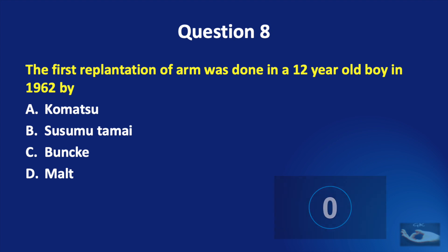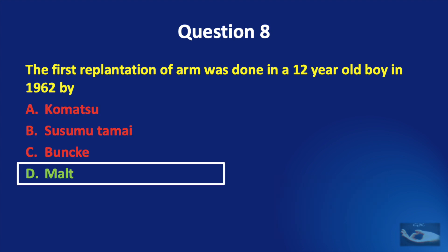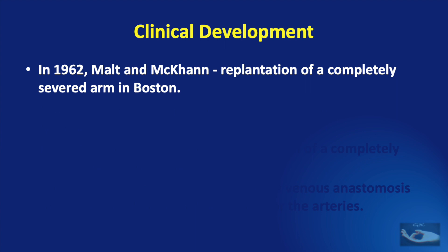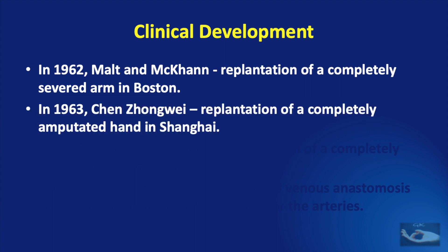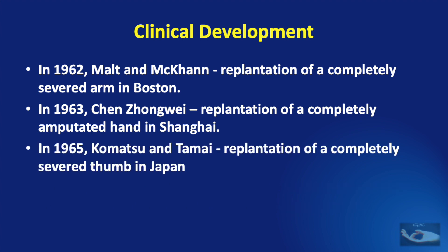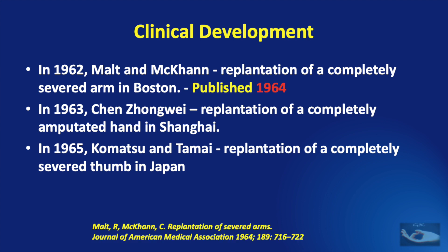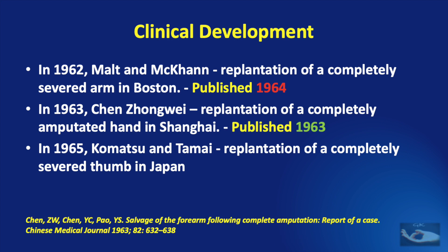The correct answer is Malt. In 1962, Malt and McKhann performed the replantation of a completely severed arm in Boston. In 1963, Chen performed the replantation of a completely amputated hand in Shanghai. In 1965, Komatsu and Susumu Tamai performed the replantation of a completely severed thumb in Japan. Controversy arose because Malt published his article in 1964 whereas Chen published in 1963 itself.